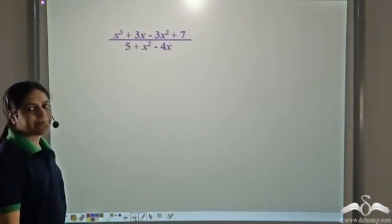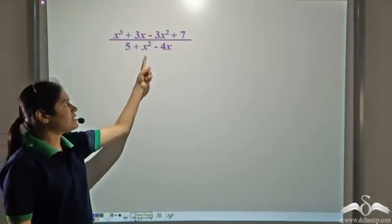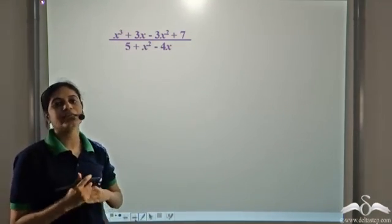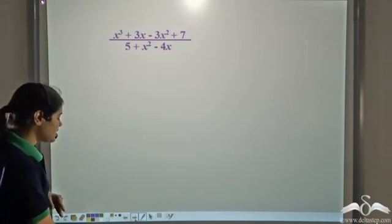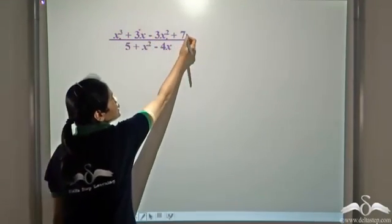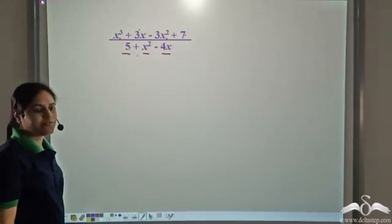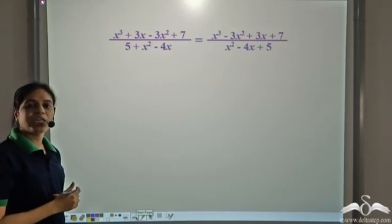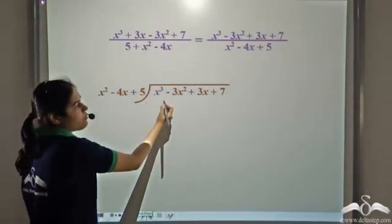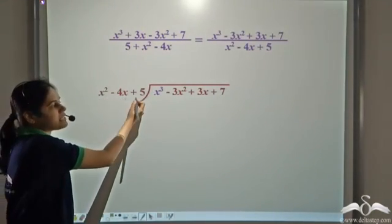Now let us solve one more example: divide x cubed plus 3x minus 3x squared plus 7 by 5 plus x squared minus 4x. We need to rearrange the terms in decreasing order of power. The numerator becomes x cubed minus 3x squared plus 3x plus 7, and the denominator becomes x squared minus 4x plus 5.